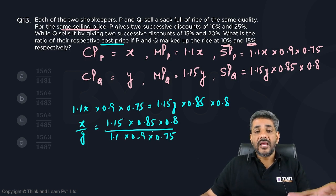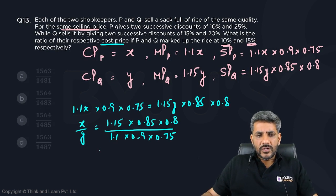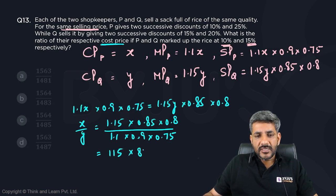Everything lies in this calculation now. We just have to do the calculation. I'll remove the decimals: it becomes 115, 85, 8 in the numerator. In the denominator: 11, 9, 75.